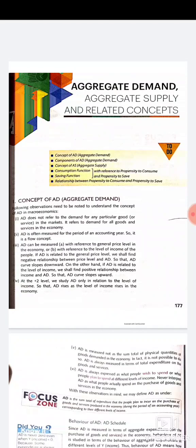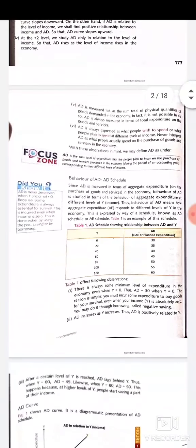Aggregate demand is measured in terms of total expenditure on goods and services. It will not be measured in terms of total physical quantities of goods demanded in the economy. Also, aggregate demand is always expressed as what people wish to spend or plan to spend at different levels of income.